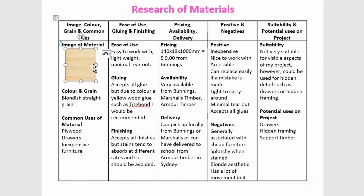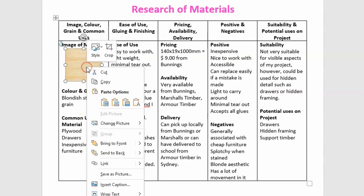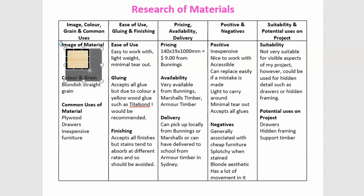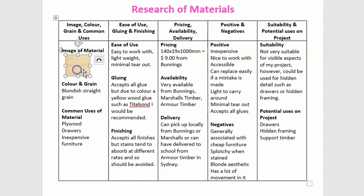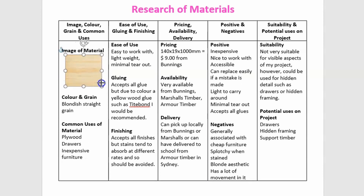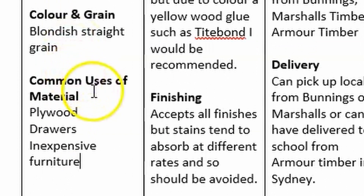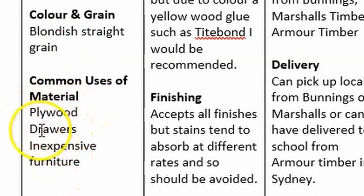Make sure the image is roughly square to fill the majority of the cell. If it's too large you can crop it — right-click, go Crop, and bring it in to select the grain you want. For colouring and grain, describe whether it's a straight grain or whether there are a lot of curls. For common uses, just list them. Dot points in tables can get a little overwhelming, so I find listing them with capital letters for each point works best.